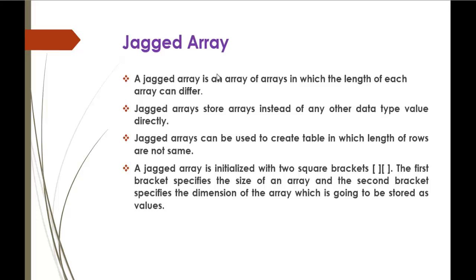Imagine an array where the length can be varied — it is not fixed. A jagged array is initialized with two square brackets. The first bracket specifies the size of the jagged array, and the second bracket specifies the dimension of the array that is going to be stored as a value. So the first bracket tells us the number of rows in the jagged array, and the second bracket tells us the dimension of the inner arrays we are going to store.